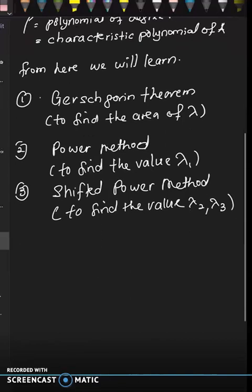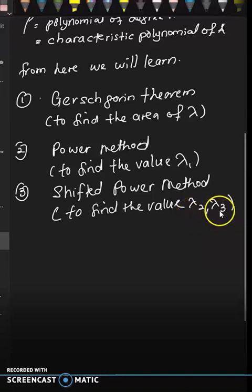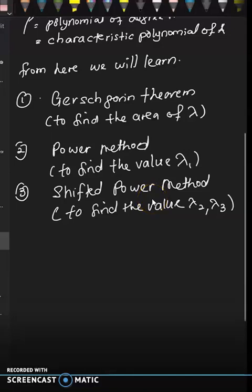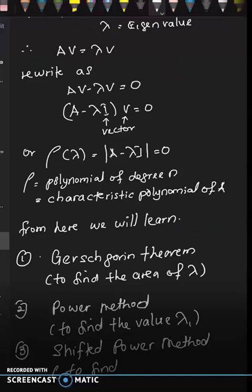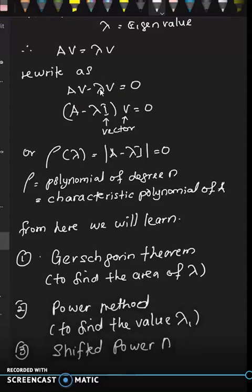The shifted power method is important because we can find other eigenvalues — for example lambda 2, lambda 3, up to lambda N. Once we have a lambda, we can find the associated eigenvector V. So for a 3 by 3 matrix, we have 3 eigenvectors and 3 eigenvalues.